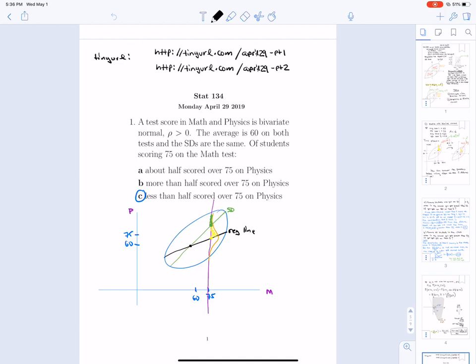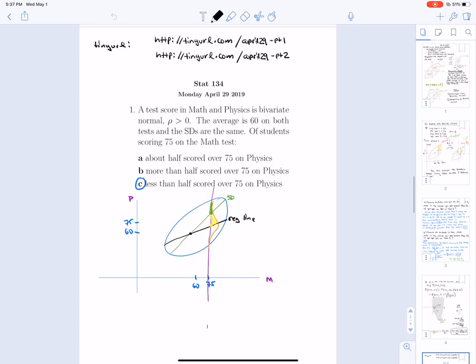So you can see this by recognizing that the area in yellow in my bivariate normal picture here is 50%. And the area in green is what I'm looking for. Because 75 on math and 75 on physics would be a point on the SD line. And so we're looking for points greater than 75 in physics. So it will be less than a half.